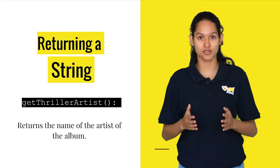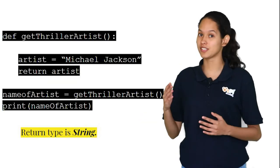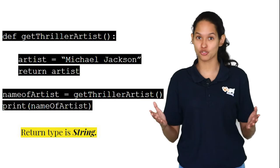In case you'd like to return a specific piece of information such as the name of the artist, you can use this code. Here the return type is string.